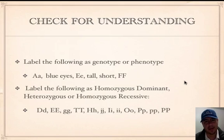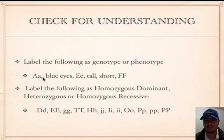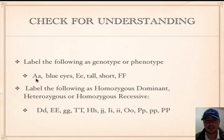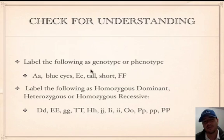Let's practice genotype versus phenotype. Big A little a — you're talking about a combination of letters, so that's genotype. Blue eyes — that's physical appearance, so that's phenotype. A letter combination is genotype; physical appearance like 'very tall' is phenotype. If I give you just letters like big T little t, again that's genotype. Physical appearance is always phenotype.